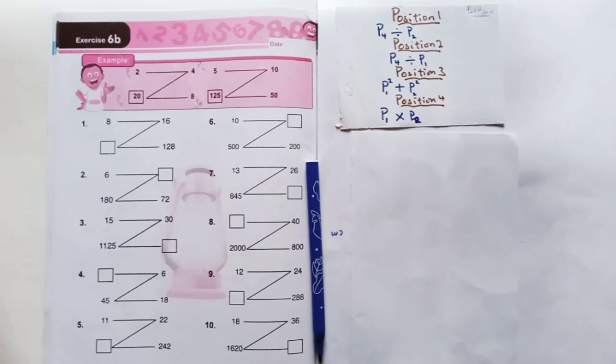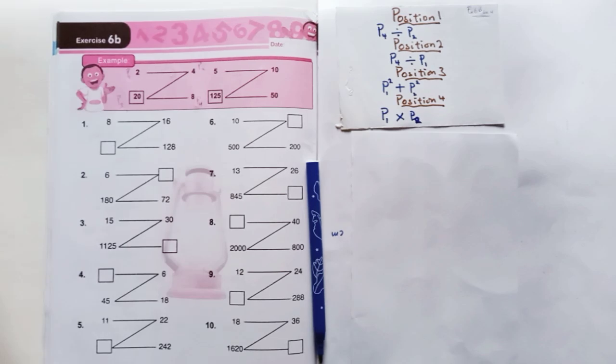Hello guys and welcome back to another video. We are looking at exercise 6B of the Lantern Quantitative Reasoning book 4. This is page 16 and let's get right into it.